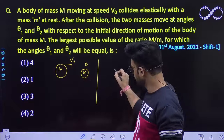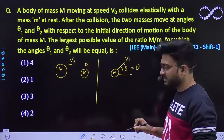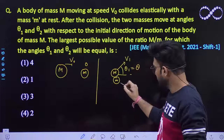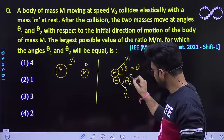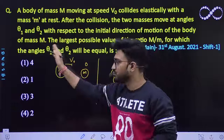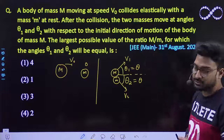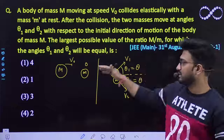After collision, capital M is moving with speed V1 at angle theta 1, which we let be theta. The second body moves with speed V2 at angle theta 2 with the initial direction of motion. We need to find the maximum ratio of capital M by small m such that both angles are equal to theta.